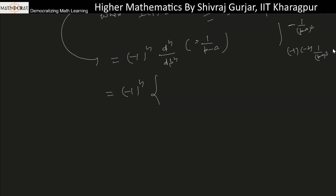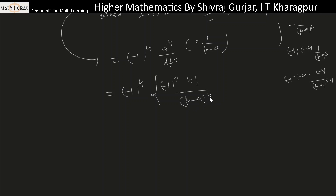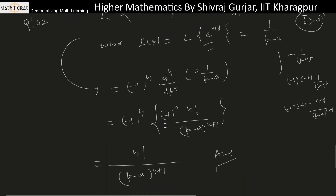After n differentiations, we get (−1)^n times (−1)(−2)···(−n) divided by (p−a)^(n+1), which equals (−1)^n times (−1)^n times n! divided by (p−a)^(n+1). This simplifies to n! divided by (p−a)^(n+1). So the Laplace of t^n·e^(at) equals n!/(p−a)^(n+1). For further practice, you may try problems from Advanced Differential Equations by M.D. Raisinghania, Part 4A.